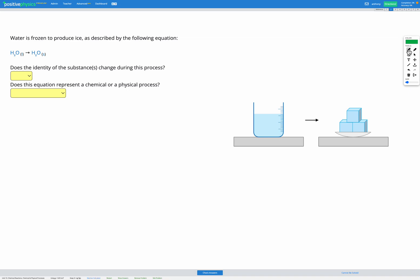In this question we're given the equation and description for a process and we need to decide if it's a chemical or physical process. A chemical process is one in which the identity of the substances changes during the process. By identity we mean what a substance is made up of actually changes.